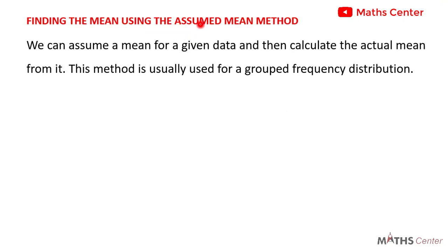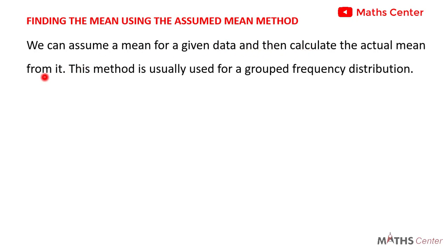Finding the mean using the assumed mean method. We can assume a mean for a given data and then calculate the actual mean from it. This method is usually used for a grouped frequency distribution. In the assumed mean method, we will assume a mean — it is usually given to you in the question. Then you use the assumed mean to calculate the actual mean.